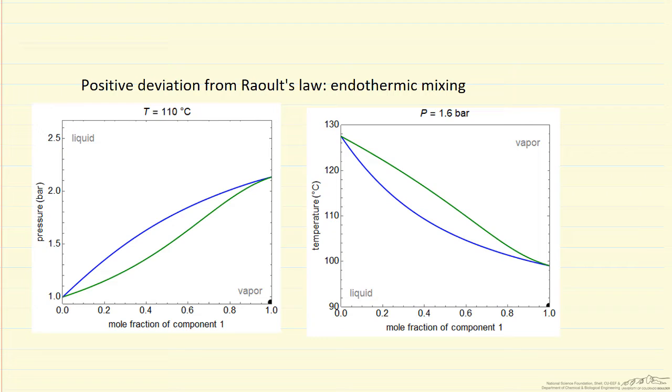Positive deviation means the like molecules prefer to be near each other as opposed to the unlike molecules. In other words, the attractive interactions between AB molecules is less strong than between AA or BB. If AA interaction and BB interactions were identical, the AB interaction would be less.